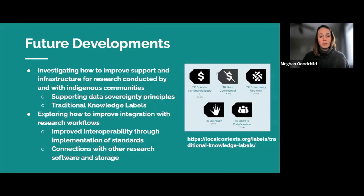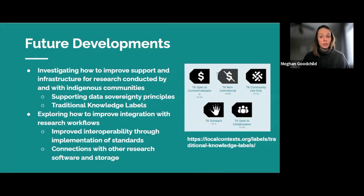In terms of future developments, the Borealis team is working on a number of projects. We have been investigating how to improve support and infrastructure for research conducted by and with Indigenous communities, including exploring ways Borealis could support data sovereignty principles and incorporating traditional knowledge labels that identify and clarify community-specific rules and responsibilities regarding access and future use of traditional knowledge. We are also exploring improved interoperability through implementation of controlled vocabularies and other metadata standards, and investigating possibilities of connecting Borealis to trusted remote storage.